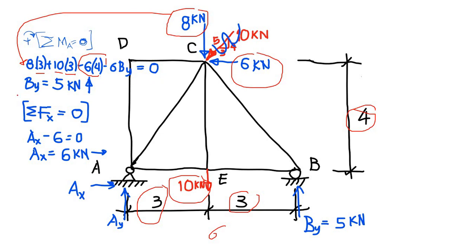When we solve for BY, we have BY equals to positive 5 kilonewtons, and of course the direction is upwards. So we have now solved for our BY, which is 5 kilonewtons.